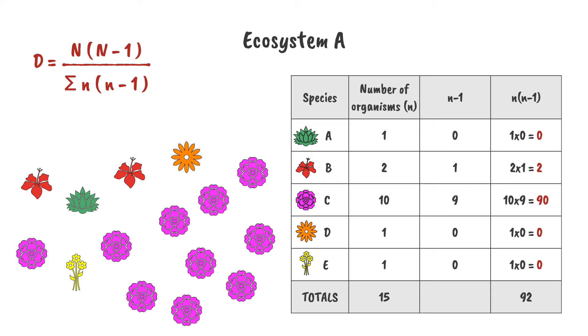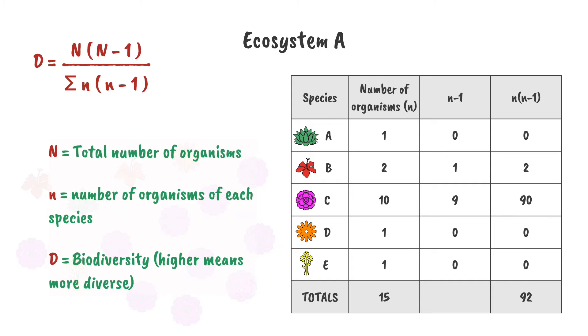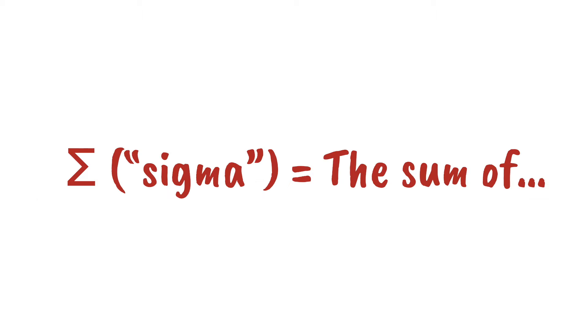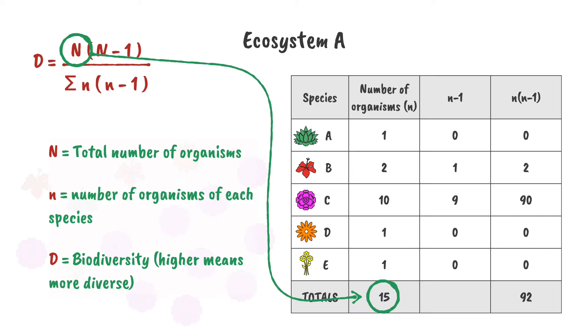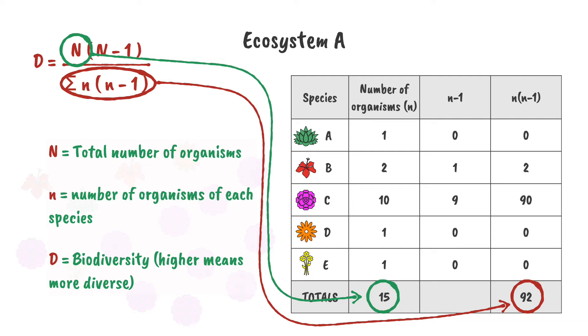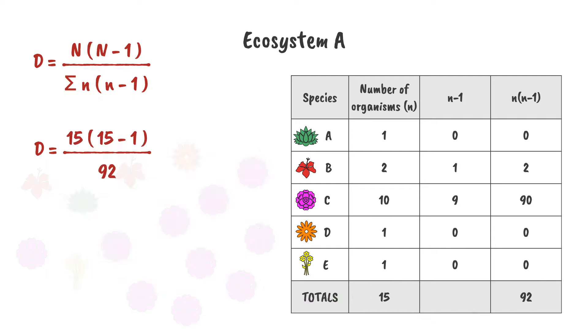So now we can use the equation. Uppercase N is our total number of all species. This value right here. The funny E-shaped symbol is called sigma, and means the sum of. So the bottom part of the equation is just all of the lowercase n times n-1 values added up. This value here. The rest is easy. We just put the values into the equation, and we end up with a value of 2.28.